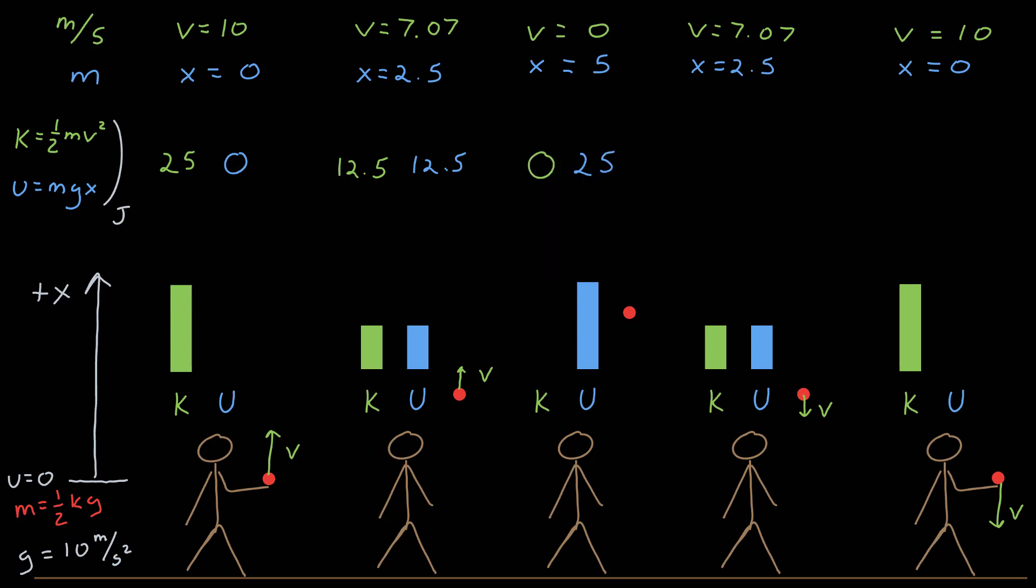Now at the top, the velocity is equal to zero, and so the kinetic energy is zero. The potential energy is the mass, which is one-half, times the acceleration due to gravity, which is 10, which is 5, times the position, which is 5, which is 25 joules. So the potential energy at the very top is the same energy as the kinetic energy in the beginning.